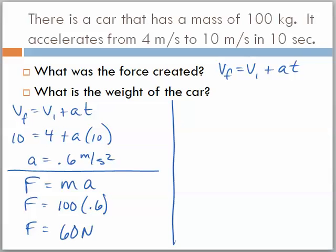Okay, I went ahead and filled some things in for us to save on some time. But I used our velocity final equals velocity initial plus acceleration times time. I plugged in the fact that it was going 10 meters per second. It was going 4 meters per second. It accelerated up to 10 meters per second in 10 seconds. I put that in for the time. The acceleration then turns out to be 0.6 meters per second squared. I then plugged that in for the acceleration. And it tells us that this car weighs 100 kilograms. So the force that must have been applied to the car to cause it to accelerate had to be 60 newtons.